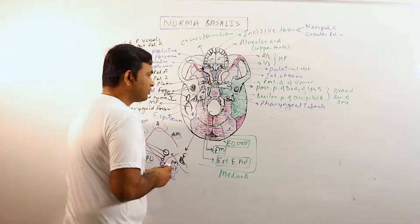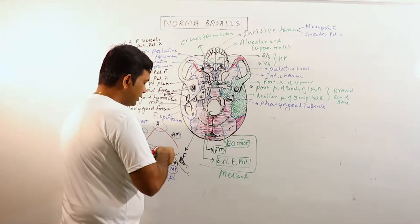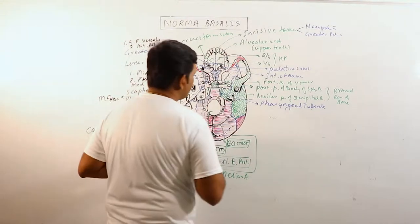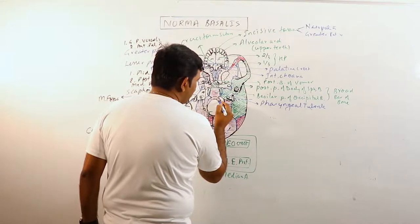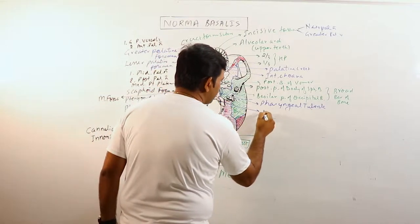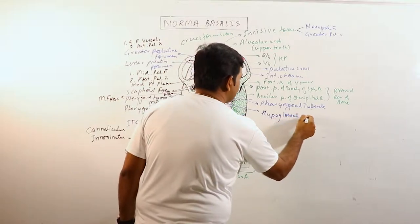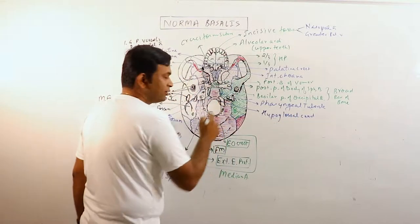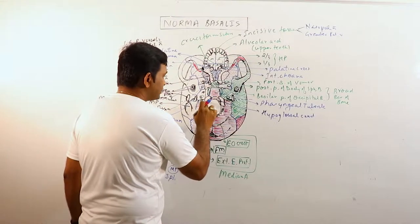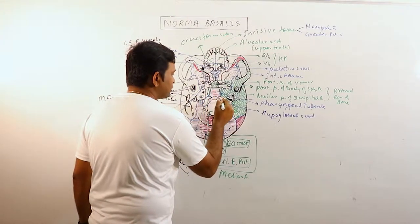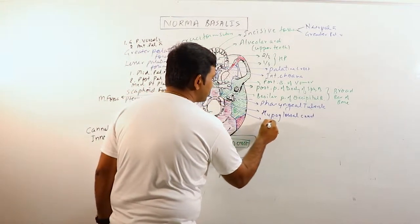Now the lateral area. Lateral area is basically contributed by some structures like hypoglossal canal. It is median to occipital condyle. These regions, that is this one and this one, these are basically occipital condyles.